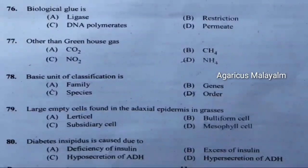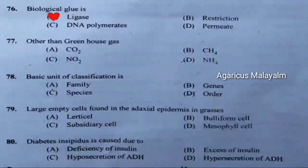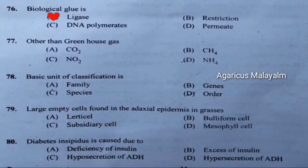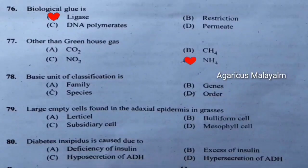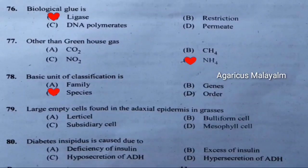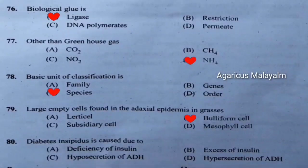Seventy-sixth question: Biological glue is. Correct answer is option A — ligase. Seventy-seventh question: Which of the following is other than a greenhouse gas. Correct answer is option D — ammonia. Seventy-eighth question: Basic unit of classification is. Correct answer is option C — species. Seventy-ninth question: Large empty cells found in the adaxial epidermis in grasses. Correct answer is option B — bulliform cells.